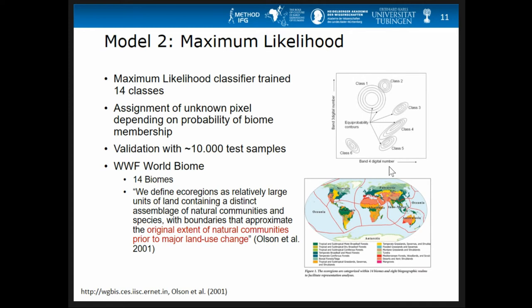The next thing we tried is the maximum likelihood method. Most of you likely know maximum likelihood classifiers: you train a model and then, based on the probability that an unknown pixel belongs to a class, you get a classification and a confidence value. As training data we used the WWF World Biomes dataset, which consists of 14 biomes. Importantly, it is mapped today but shows the original extent of natural communities prior to major land-use change — in other words, what vegetation would look like if humans had not had such a high impact on Earth, which is exactly what we need for paleo modeling.